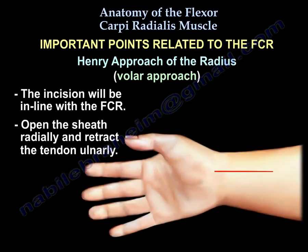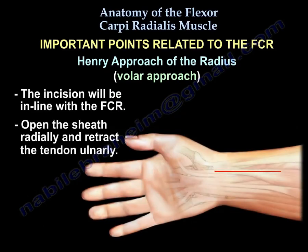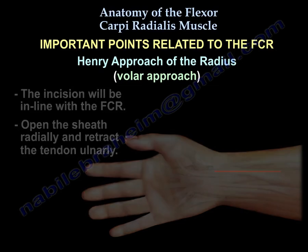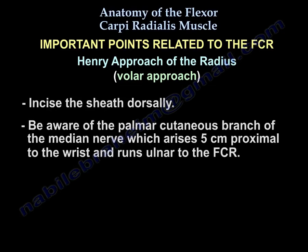The incision is made in line with the flexor carpi radialis. Open the sheath radially and retract the tendon ulnarly. Incise the sheath dorsally, being careful that the palmar cutaneous branch of the median nerve arises 5 cm proximal to the wrist and runs ulnar to the flexor carpi radialis.